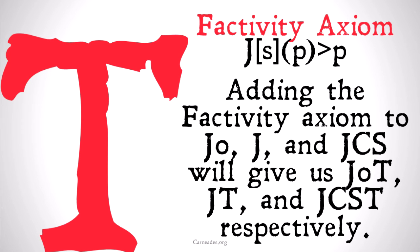Just so you're aware, adding the factivity axiom to j0, j, and jcs will give us j0t (or jt0, either way), jt, and jcst, respectively.